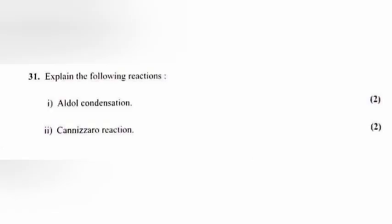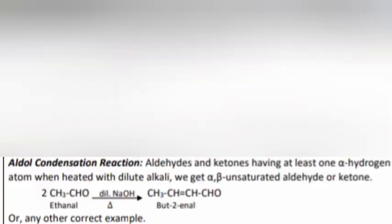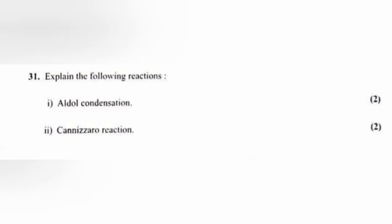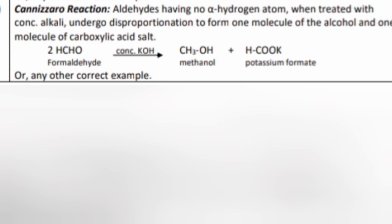Question 31: Explain the following reactions. 31.1: Aldol condensation. Answer: Aldehydes and ketones having at least one alpha hydrogen atom, when heated with dilute alkali, give an alpha, beta-unsaturated aldehyde or ketone. 31.2: Cannizzaro reaction. Answer: Aldehydes having no alpha hydrogen atom, when treated with concentrated alkali, undergo disproportionation to form one molecule of alcohol and one molecule of carboxylic acid salt.